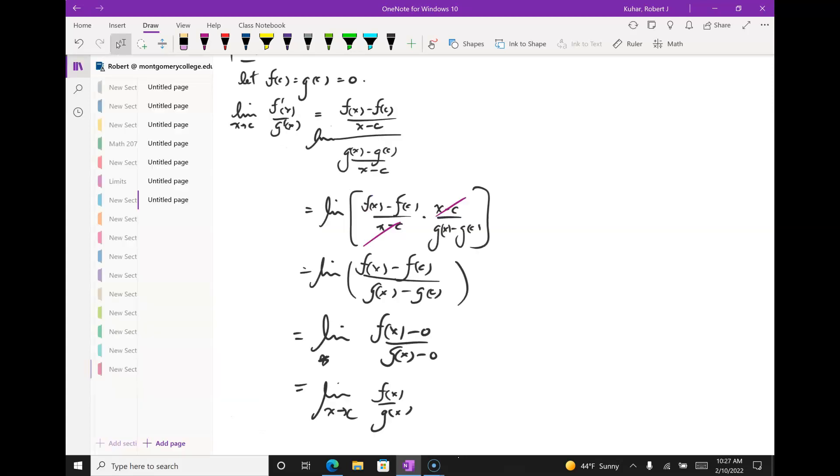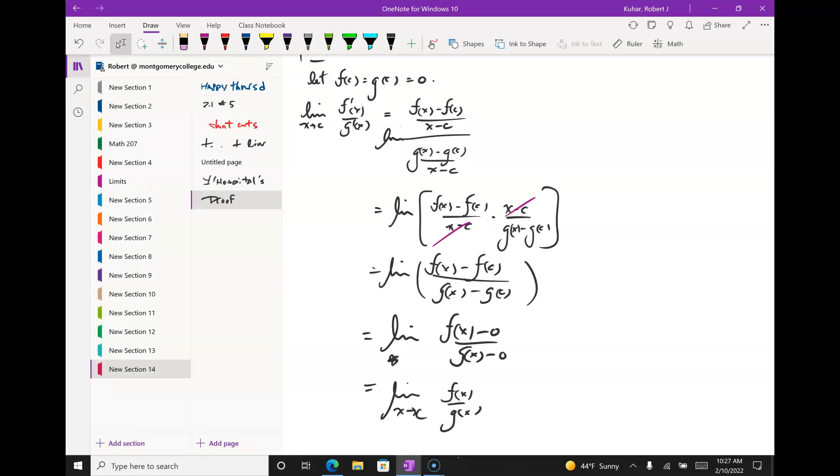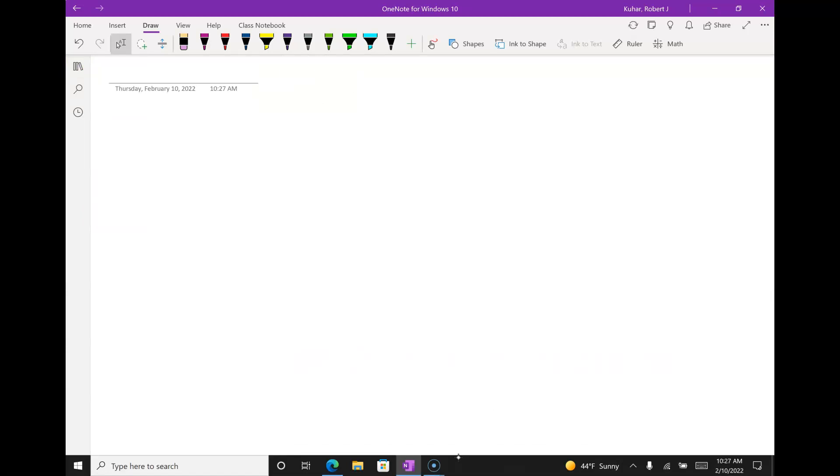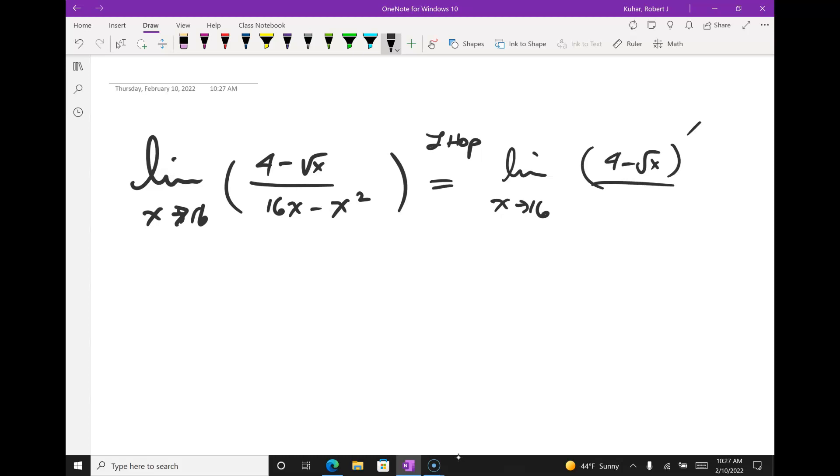The limit approaching 16. Read that one to me. The limit as x goes to 16. The numerator is 4 minus square root of x over 16x minus x squared. Beautiful. So, we already know we got a zero over zero here. So that means we can apply, we can do a little hop.